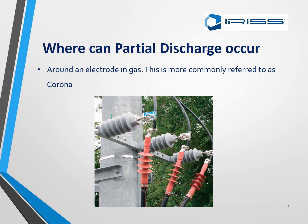Where can partial discharge occur? It can occur in voids within solid insulation, it can also occur across the surface of insulated materials, and finally within the gas bubbles in liquid insulation — for example, an oil-filled transformer.